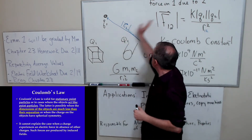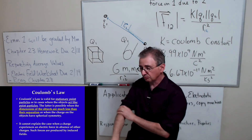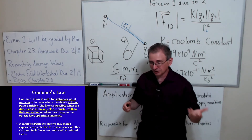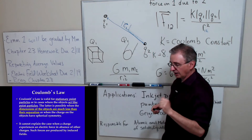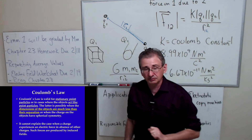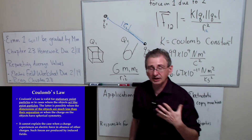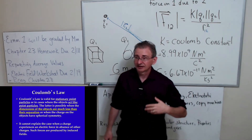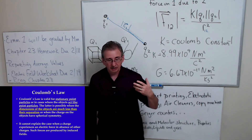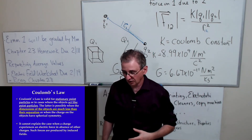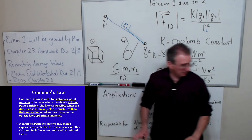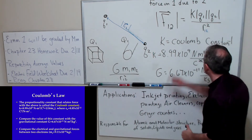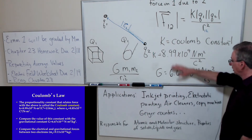Again, you want to use Coulomb's law when the particles are stationary and have spherical symmetry or act like point particles. If the charges are moving, magnetic fields are produced and this equation is not valid. Coulomb's law also cannot explain the case when a charge experiences an electric force in the absence of other charges — these occur when electric fields are induced by changing magnetic fields. Coulomb's law is nice for stationary particles but it's not an equation that can be used in all cases. We will come up with an equation that can be used in all cases later on today. Coulomb's constant is 8.99 × 10⁹ — way bigger than the gravitational constant.